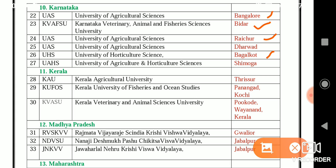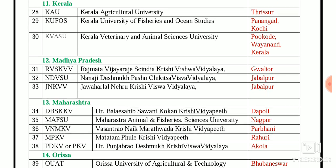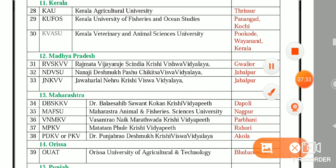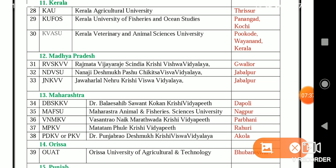In Kerala, three SAUs: KAU — Kerala Agricultural University, Thrissur; KUFOS — Kerala University of Fisheries and Ocean Studies, Panangad, Kochi; and KVASU — Kerala Veterinary and Animal Sciences University, Pookode, Wayanad, Kerala. In Madhya Pradesh, three SAUs: RVSKVV — Raja Mata Vijaya Raje Scindia Krishi Vishwa Vidyalaya, Gwalior; NDVSU — Nanaji Deshmukh Pashu Chikitsa Vishwa Vidyalaya, Jabalpur; and JNKVV — Jawaharlal Nehru Krishi Vishwa Vidyalaya, Jabalpur.